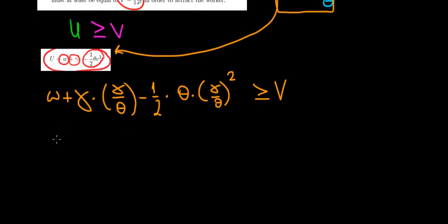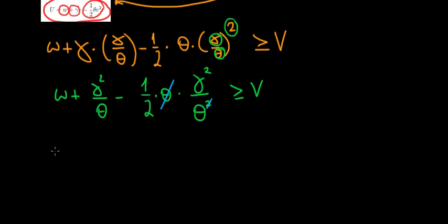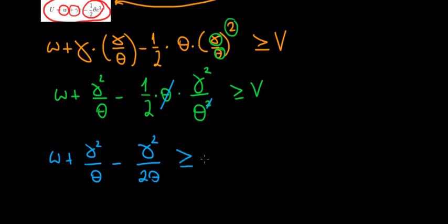Let's work out the math. We have W plus gamma times gamma — that's gamma squared divided by theta — minus one half times theta times gamma squared divided by theta squared, because we're raising both terms to the power of 2. This must be greater than or equal to V. We notice that we can cancel theta, and as a result we have W plus gamma squared divided by theta minus gamma squared divided by 2 theta, which is greater than or equal to V.